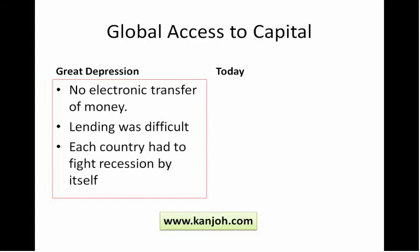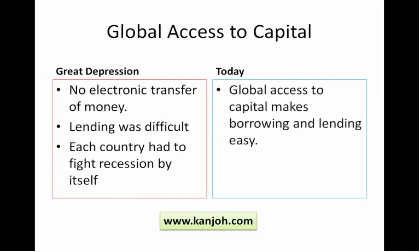On the other hand, today global access to capital makes borrowing and lending very easy. If you want to get a loan, you can do it pretty easily, as long as you're creditworthy and can find people who think that you're creditworthy. So technology has certainly helped improve things. And that means that as other economies start recovering, they'll lend their excess capital to the United States, and the United States can recover at a faster rate.